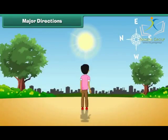This is J. He is standing facing the sun. The sun rises in the east. Therefore, east is in front of him. It means, west is behind him. North is to his left. South is to his right.